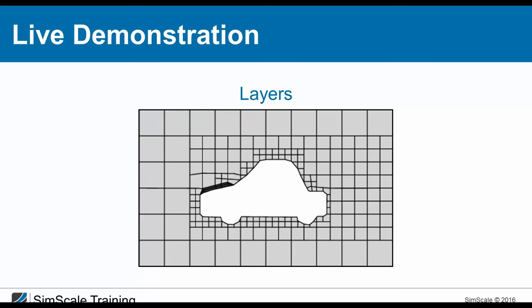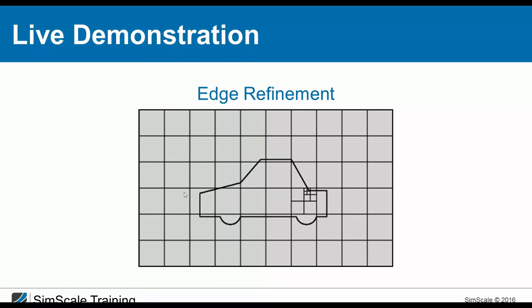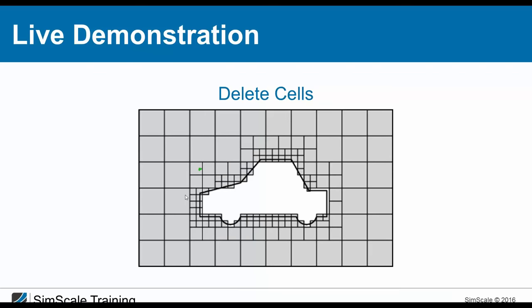Stefan from Aero France asks whether the software automatically recognizes the presence of the object and doesn't mesh through it. Yes — based on the material point, which must be outside the geometry, the inner part of the mesh is deleted. This ensures no flow goes inside the object. And Rahul's question about how the material point works to delete cells: it's very complex coding — if your material point is outside the geometry, the inner mesh is deleted; if inside, the outer part is deleted.